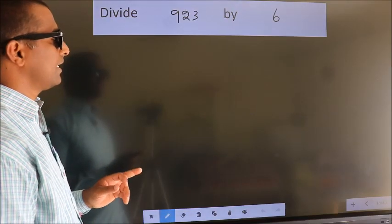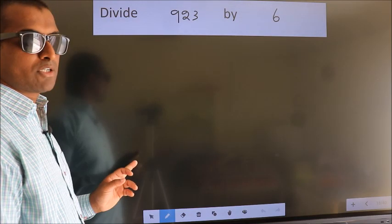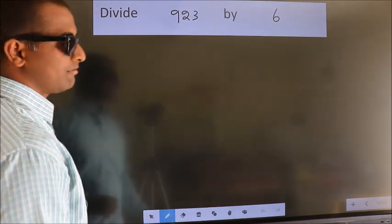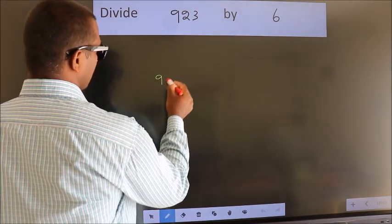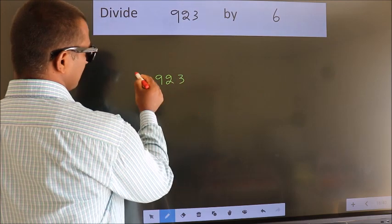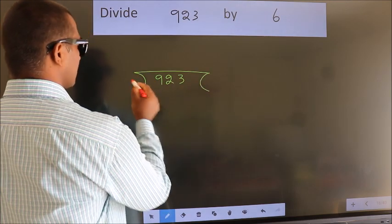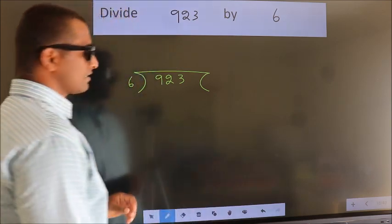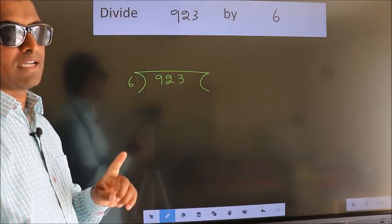Divide 923 by 6. To do this division, we should frame it in this way. 923 here, 6 here. This is your step 1.